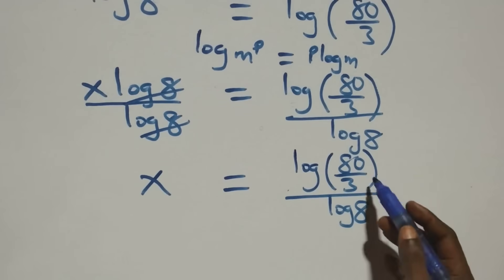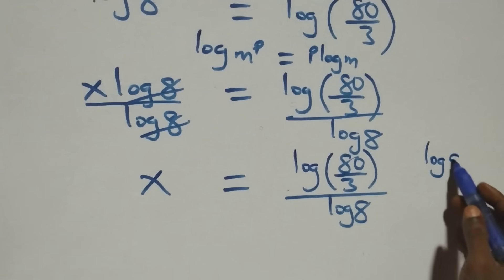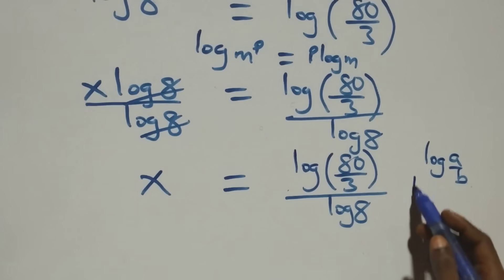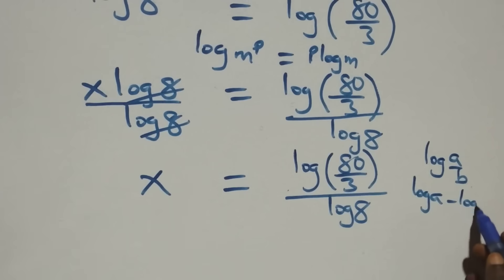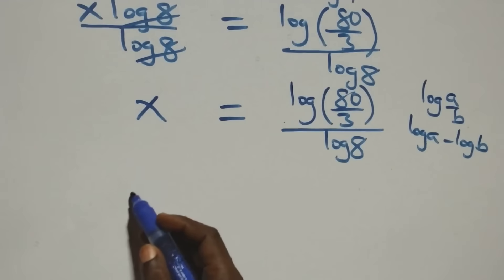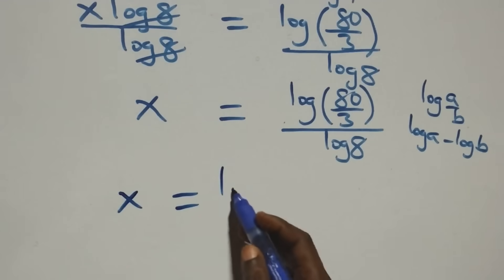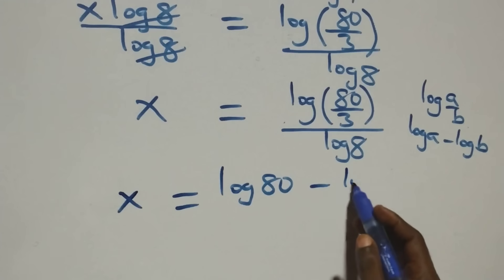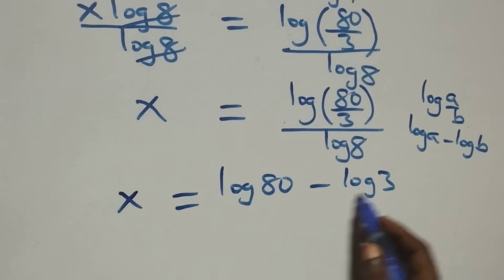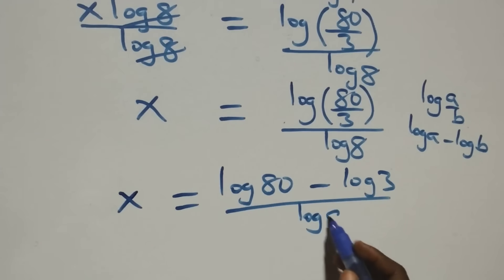From here this follows the law of logarithms: when we have log(a/b), that is the same as log a minus log b. So all we have here becomes x equals (log 80 minus log 3) over log 8.